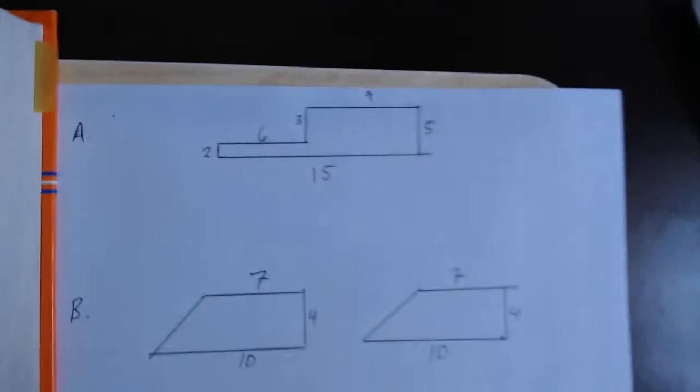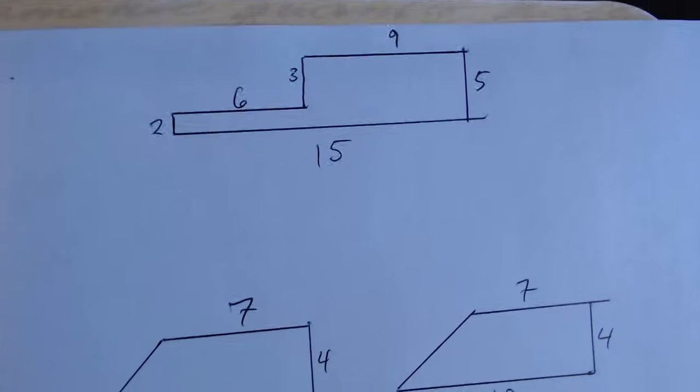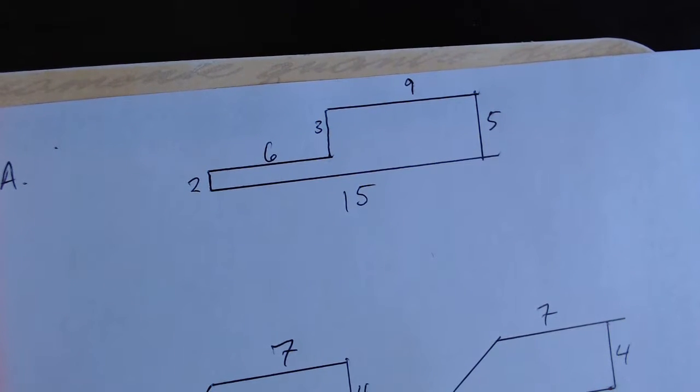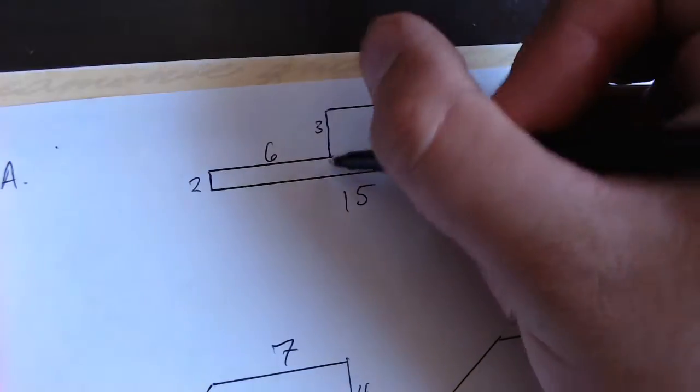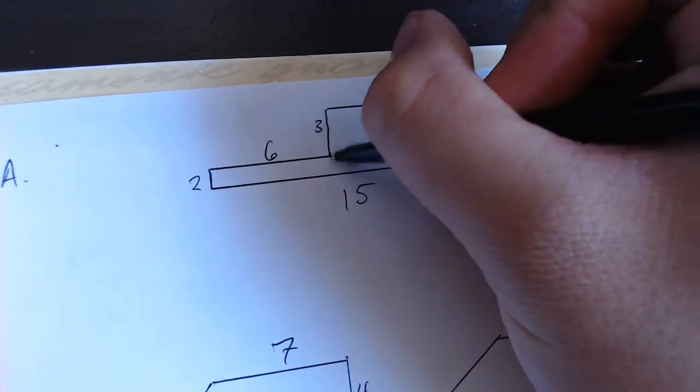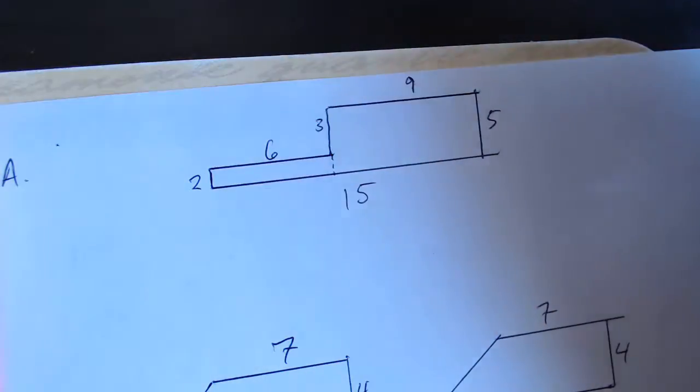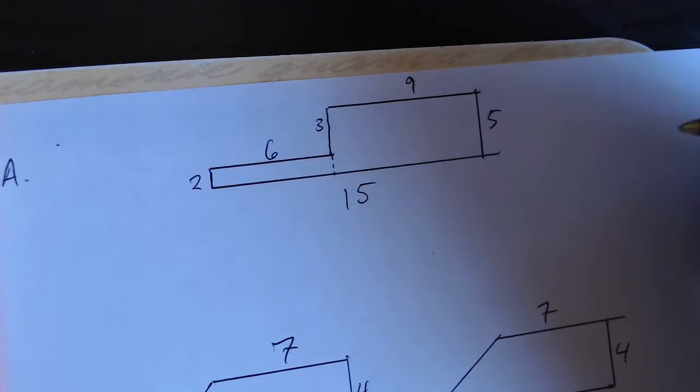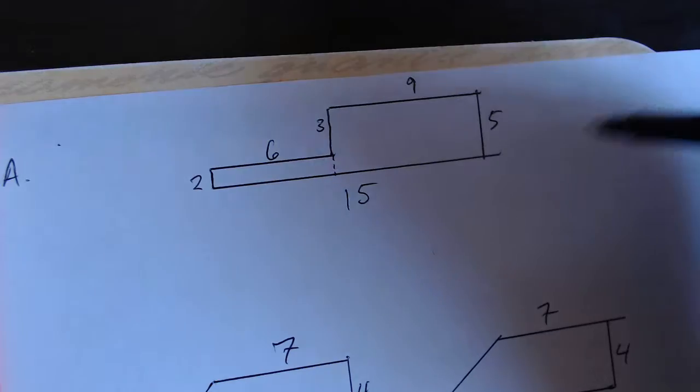Starting with A. They give us this shape, ask us to find the area, and tell us that all dimensions are in inches. So the easiest way to do this is to cut it into two shapes we know. If we draw this dashed line right here that cuts it into a big rectangle, a small rectangle, we can find those separate areas, add them together, and then we have the total area.